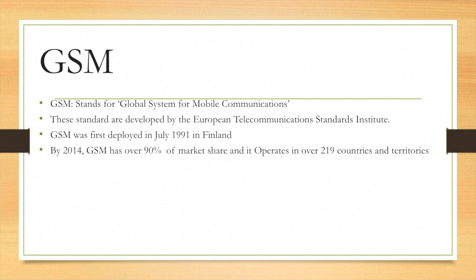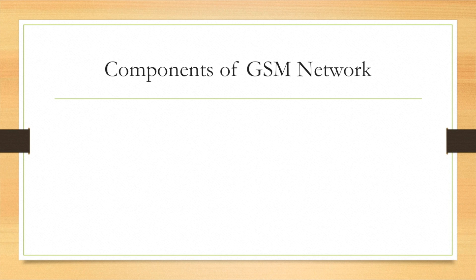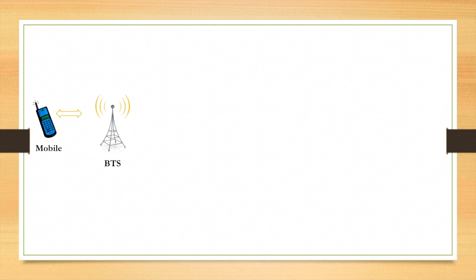GSM operates in over 219 countries and territories. The main components of the GSM network are: the mobile station, which is basically a mobile phone; the access network; and the core network. In this diagram, we see the pictorial presentation of the GSM architecture. It starts with the mobile phone, which interacts with the BTS — commonly called a mobile tower — over the air interface.